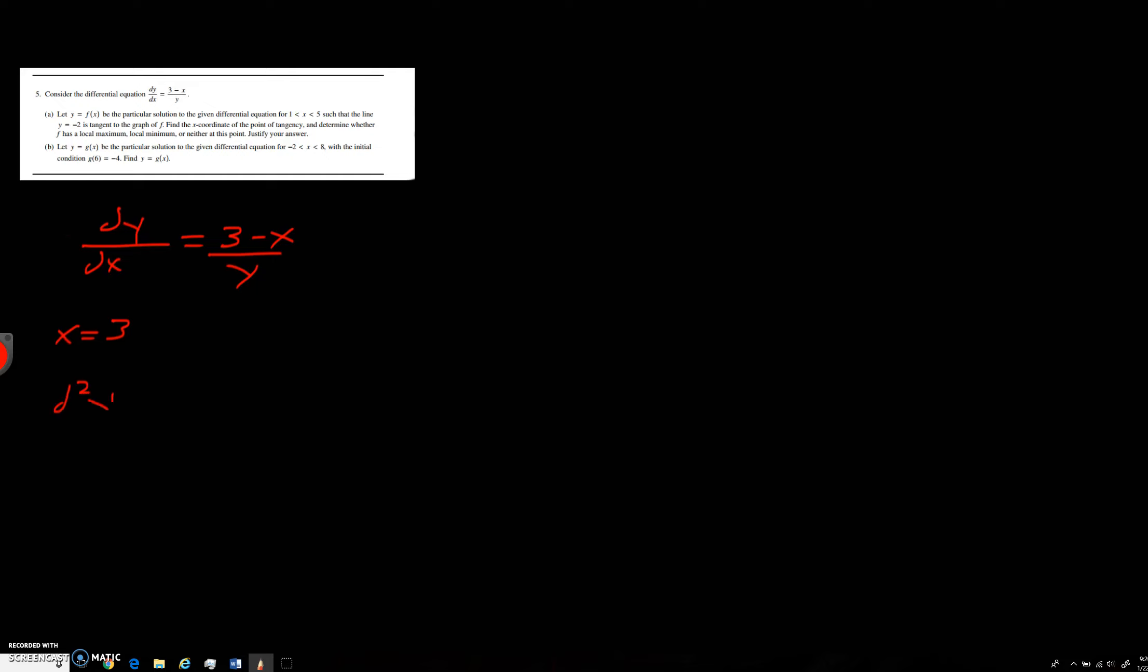we're going to do a second derivative test. So d2y over dx squared is going to equal negative 1 times y minus dy over dx times 3 minus x over y squared.